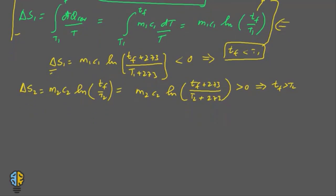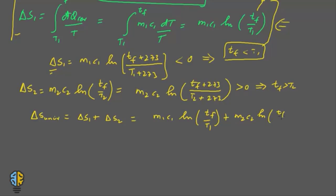The entropy change of the universe is ΔS_universe = ΔS1 + ΔS2 = m1·c1·ln(Tf/t1) + m2·c2·ln(Tf/t2). This whole value is a definite positive because mixing is an irreversible process — you cannot reverse the mixing process back to the initial states.